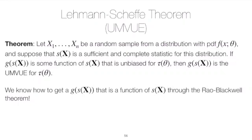On our journey to define the uniformly minimum variance unbiased estimator of some function of theta, we've built up notions of a sufficient statistic and a complete statistic. We saw that if we had an unbiased estimator of tau of theta, we could condition on a sufficient statistic and get a better unbiased estimator — meaning a lower variance unbiased estimator. It turns out that if we condition on a sufficient and complete statistic, then we end up getting the best unbiased estimator.